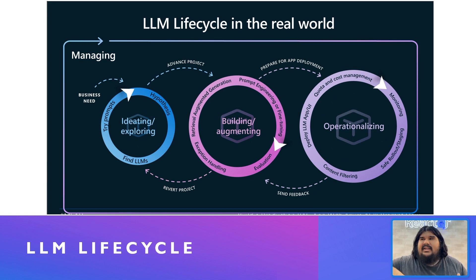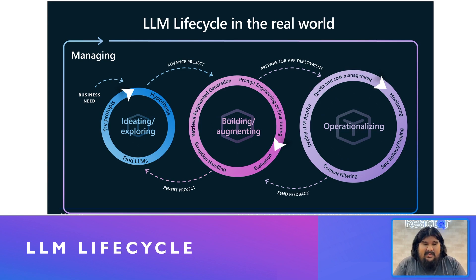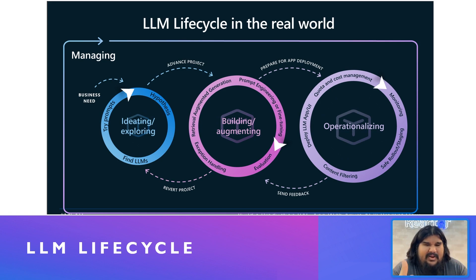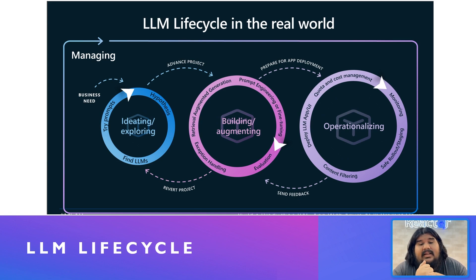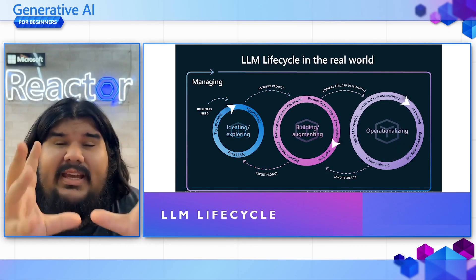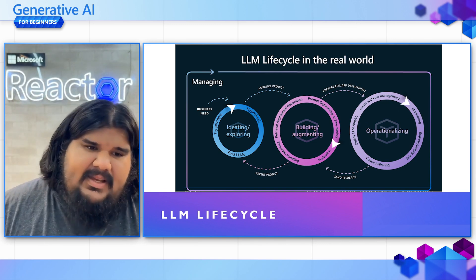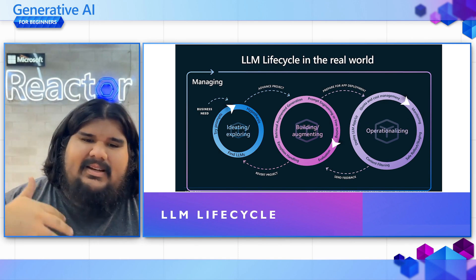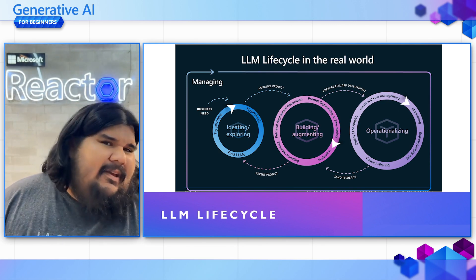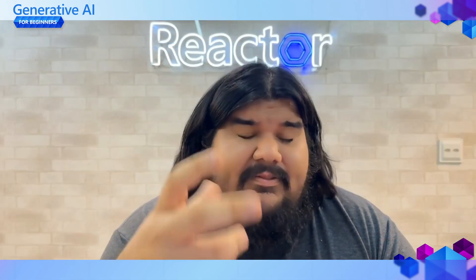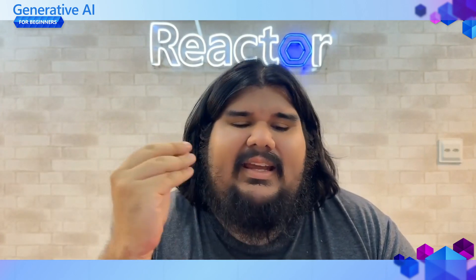We use evaluation to see if our solutions are scaling, giving right answers, and performing well under tests — and to handle exceptions using retrieval augmented generation, which tries to get answers from documents. Check our Generative AI playlist for an episode on retrieval augmented generation. Once all steps go through, we operationalize: take care of quota and cost management, monitoring, safe rollout, content filtering, and deployment. These three steps can go forwards and backwards — you can revert to new ideations based on feedback.